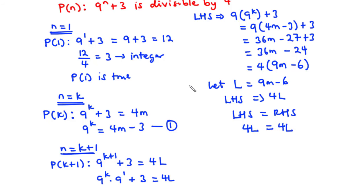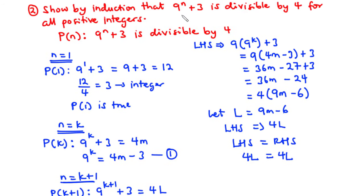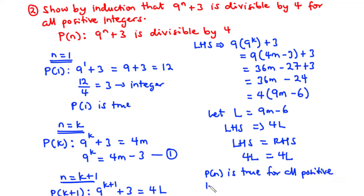We conclude that 9^(k+1) plus 3 is divisible by 4. Hence the original statement 9^n plus 3 is divisible by 4 for all positive integers n. Thus P(n) is true for all positive integers n greater or equal to 1.